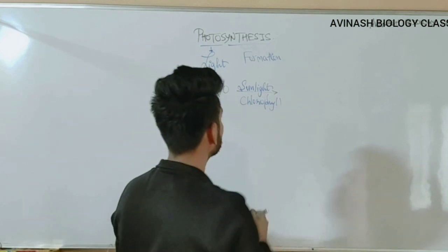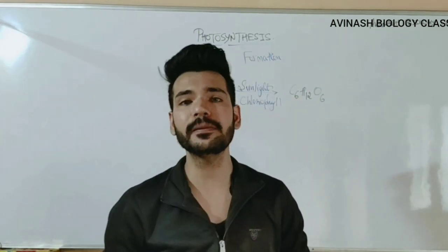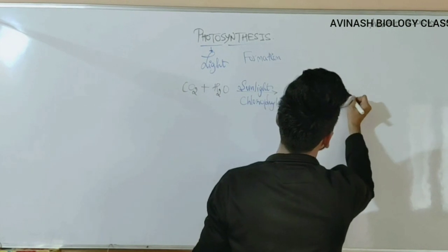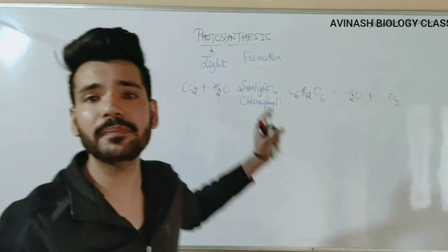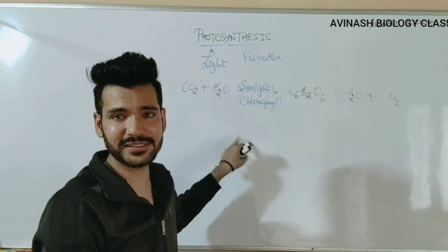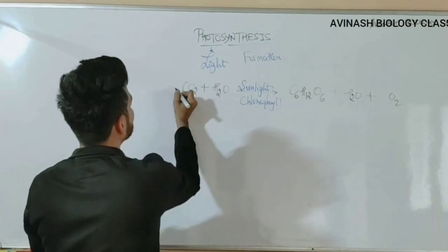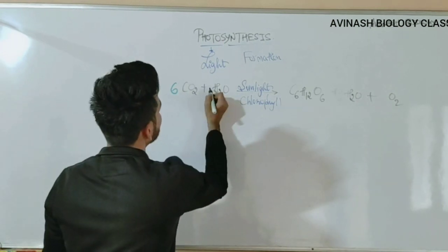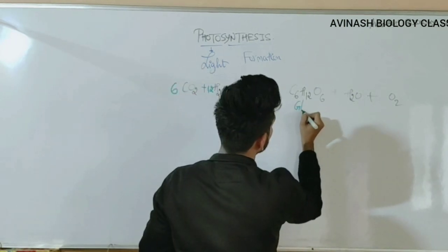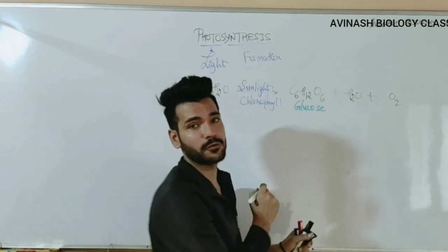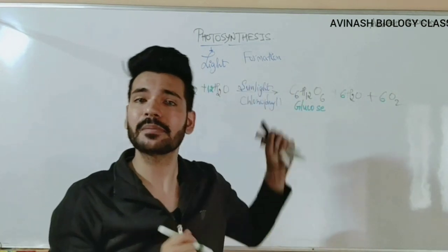Sunlight और chlorophyll की presence में यह reaction होता है। Products में glucose (C6H12O6) बनता है। साथ में water molecules और oxygen भी byproducts के form में liberate होते हैं। यह equation unbalanced है, इसे balance करना होगा: 6 molecules of carbon dioxide और 12 molecules of water मिलकर 1 molecule of glucose बनाते हैं, 6 molecules of water liberate होते हैं, और 6 molecules of oxygen liberate होते हैं। So this is how we balance the chemical equation for photosynthesis.